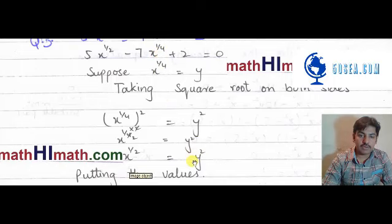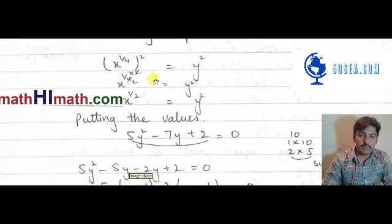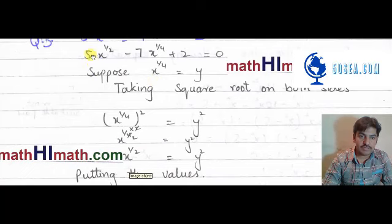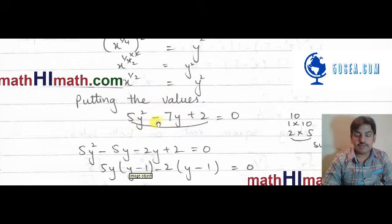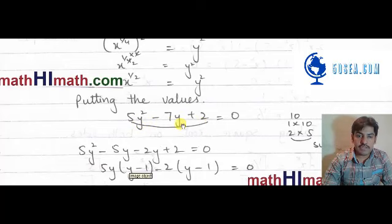So substituting back into our equation: 5y squared minus 7y plus 2 is equal to 0.